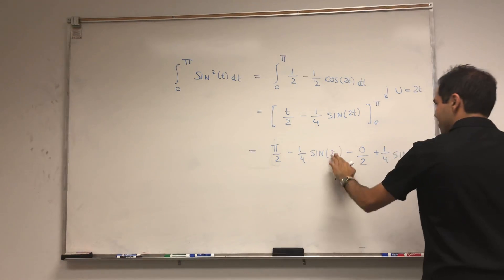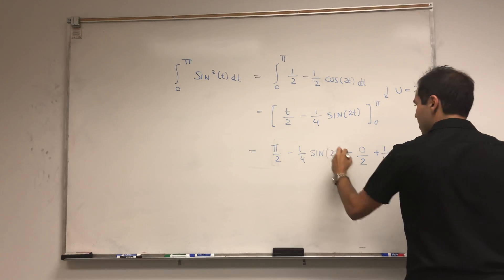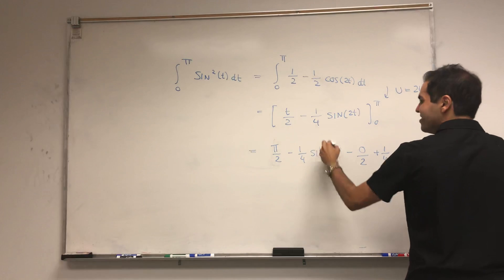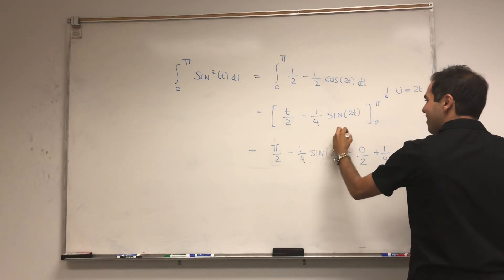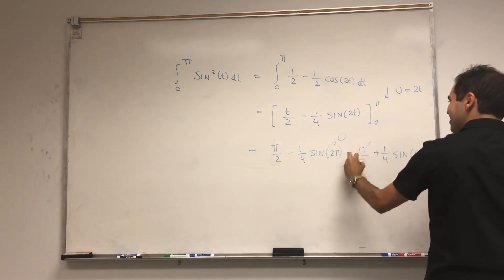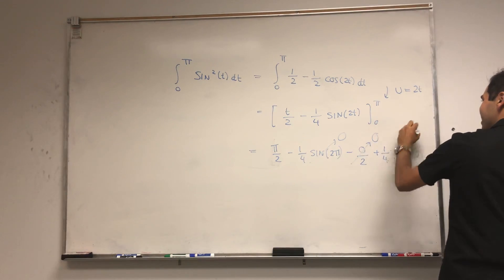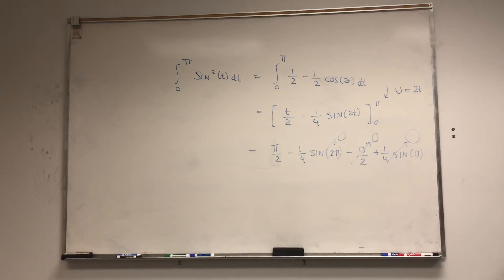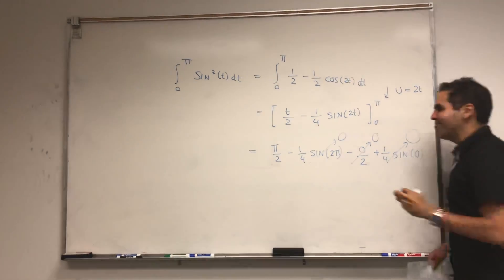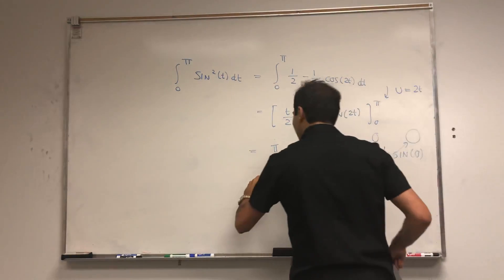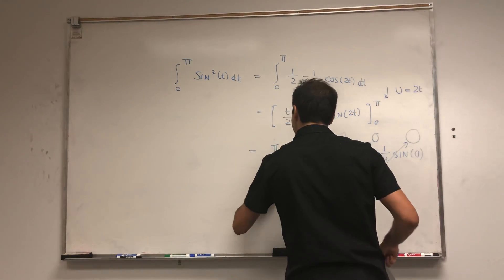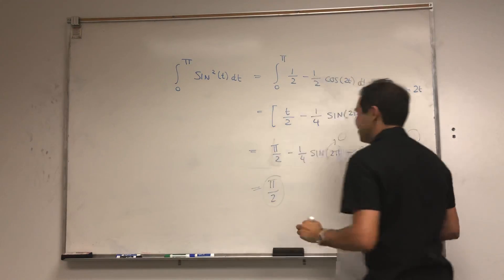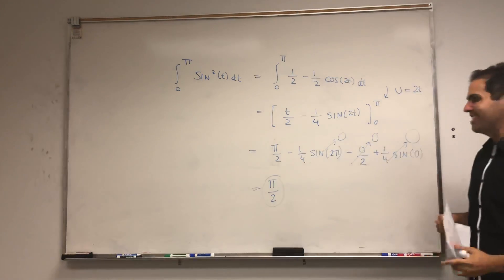Note that 2 times pi is 2pi. Now sine of 2pi disappears, sine of 0 disappears, and the zero term disappears as well. So in the end, we just have pi over 2, which is exactly what we needed.